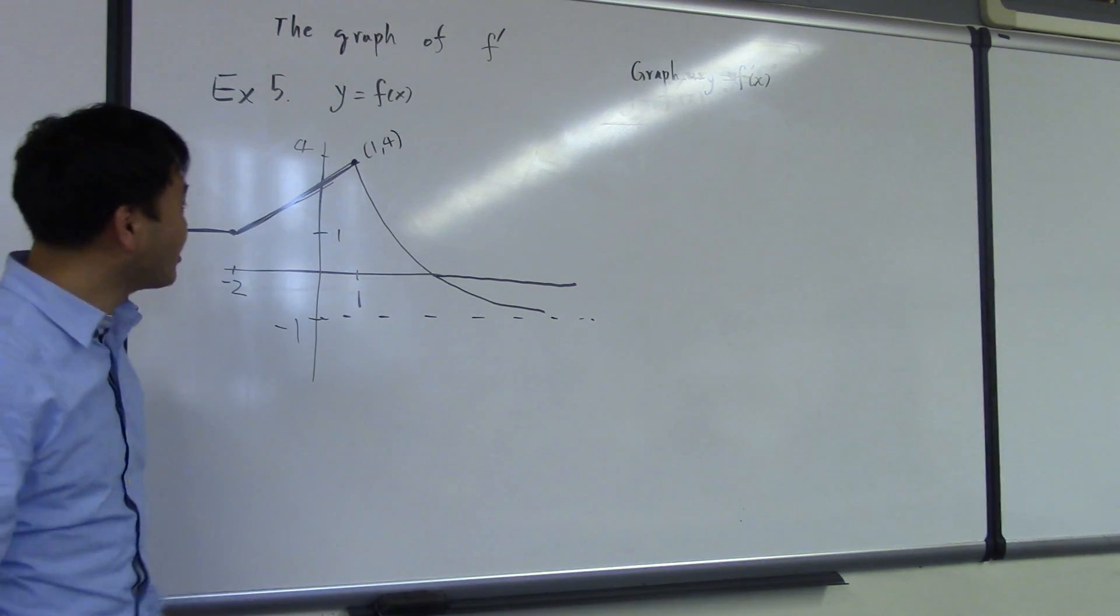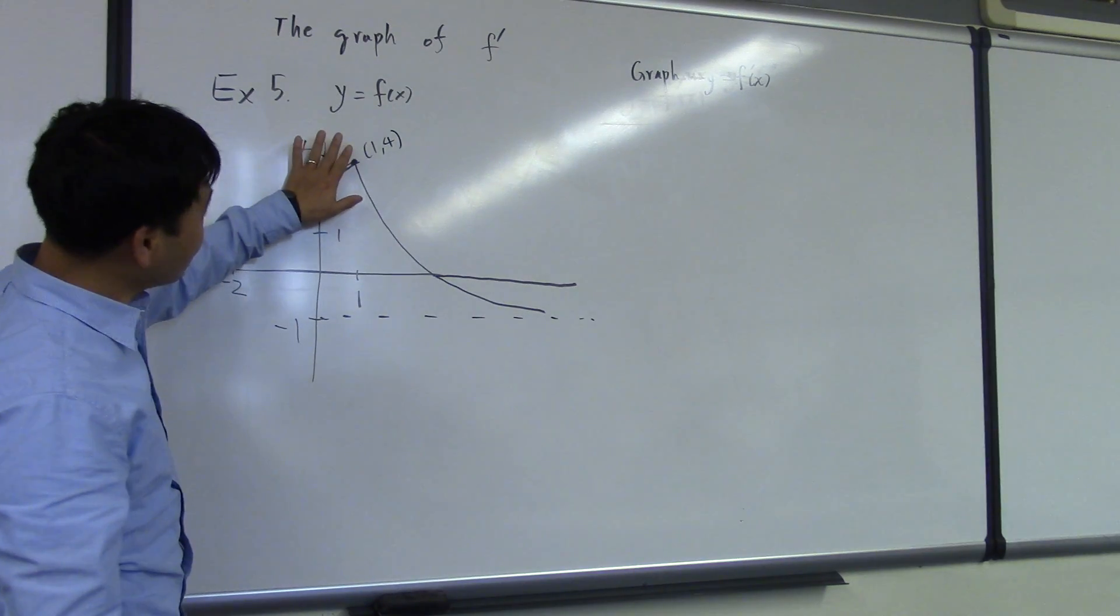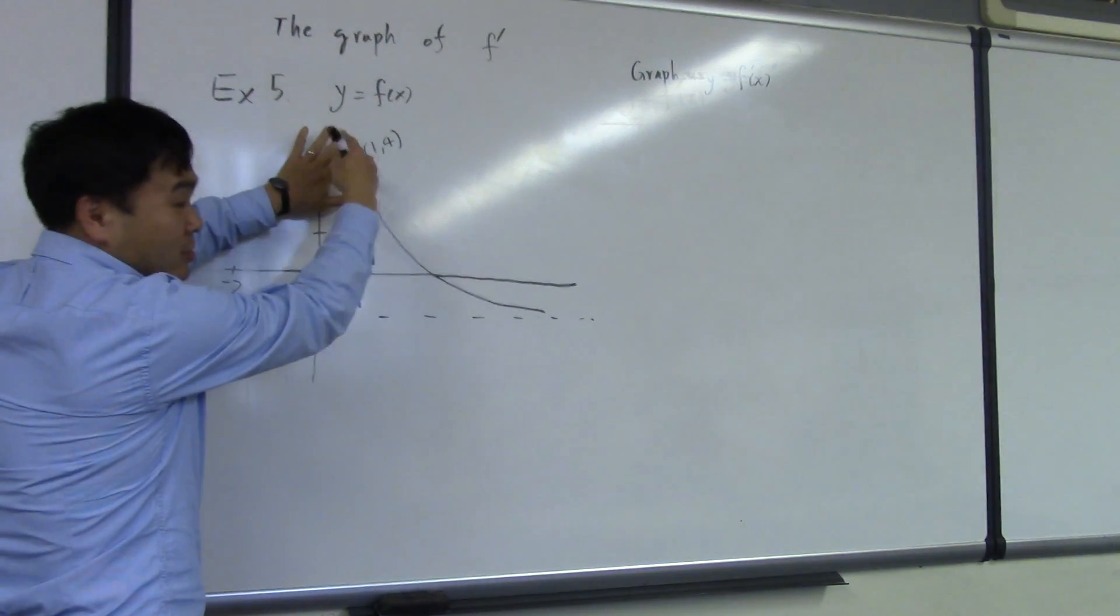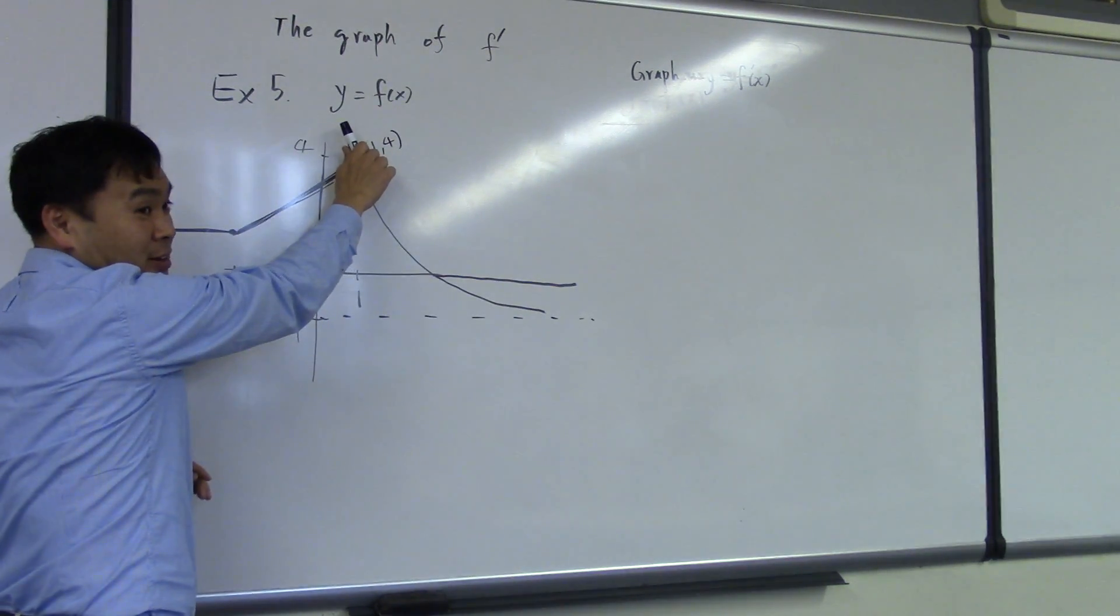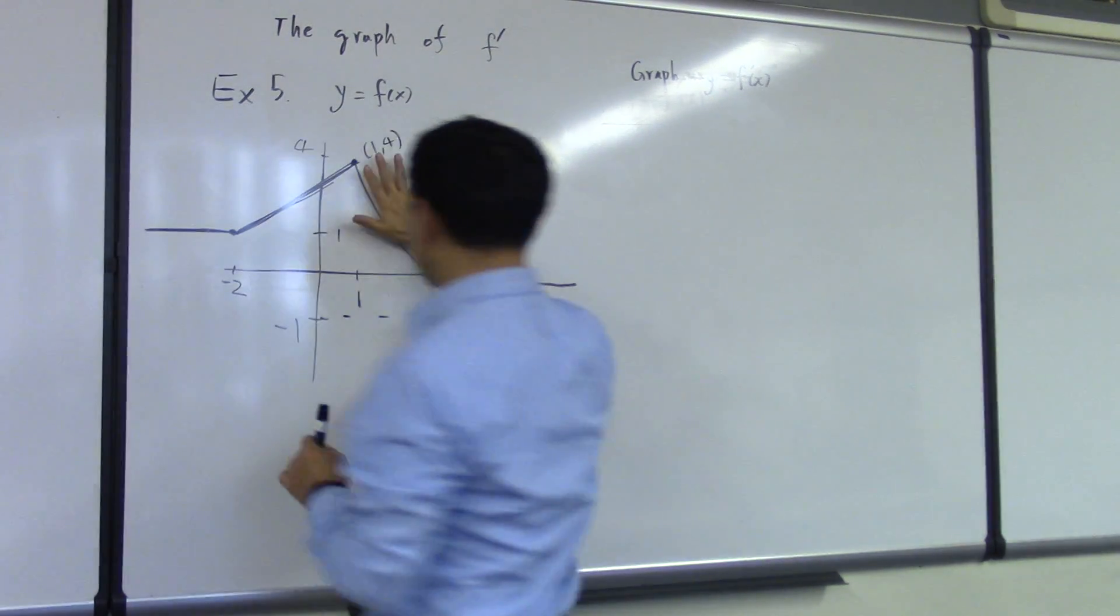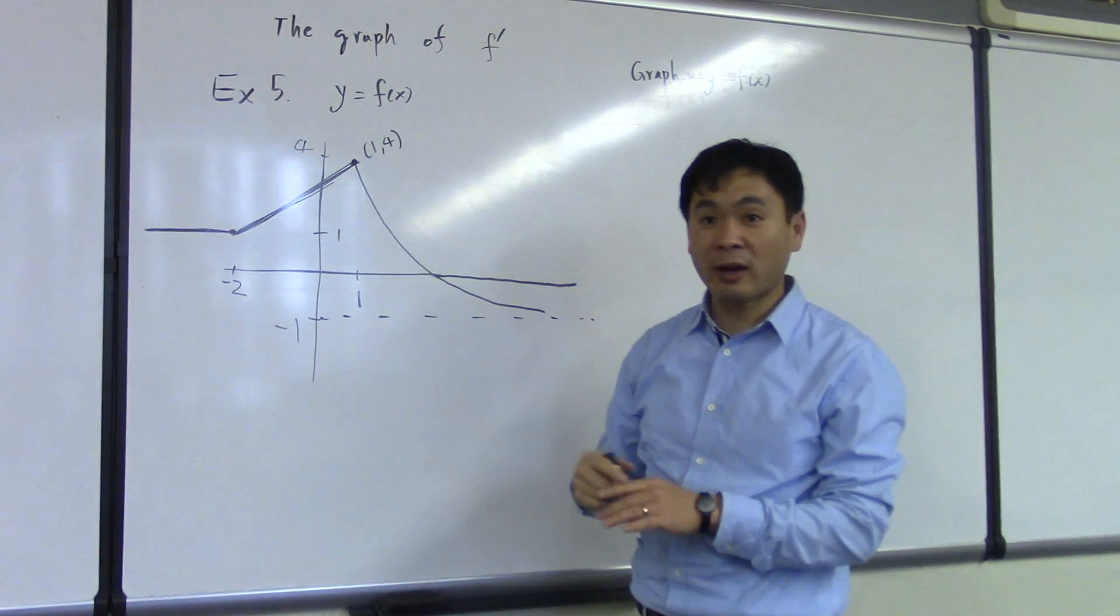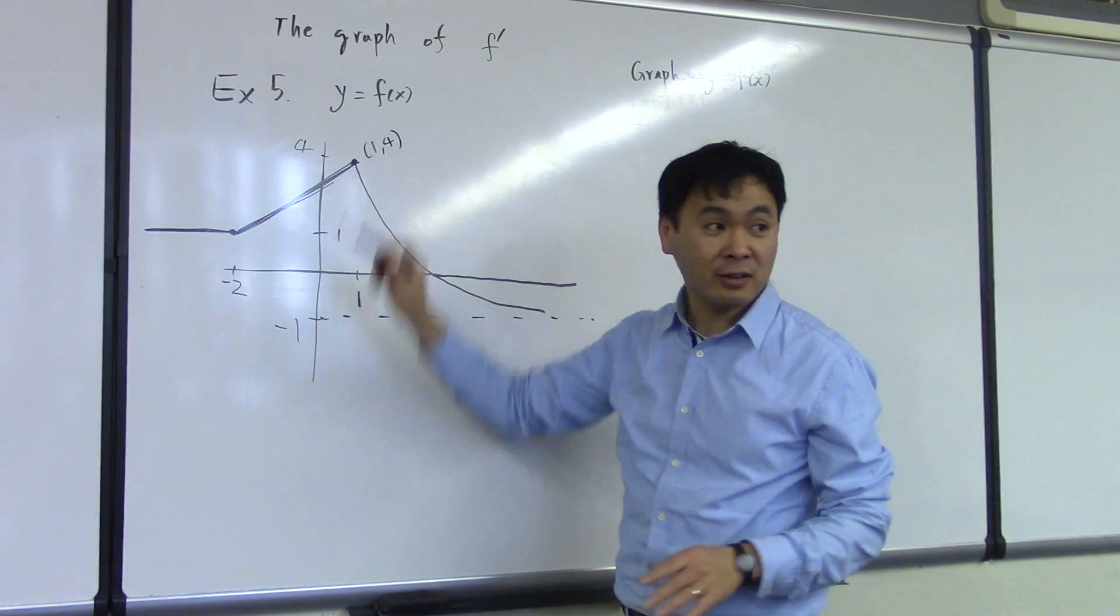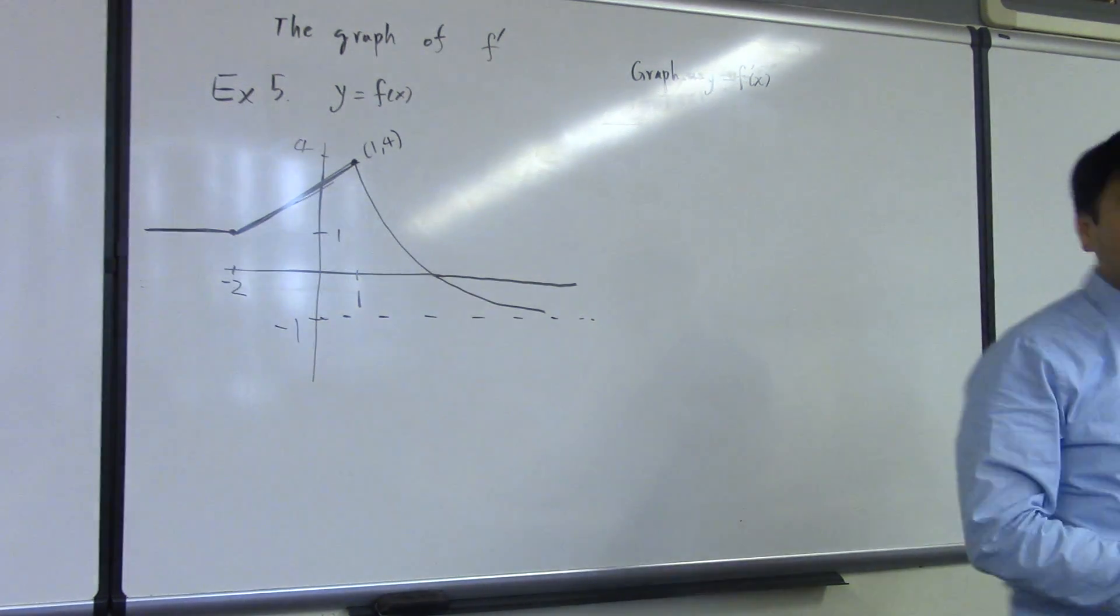You really can't say because if you cover the left side and you only consider the right side, the tangent line is like that, right? But if you cover the right side and only look at this portion of the graph, the tangent line looks like that.